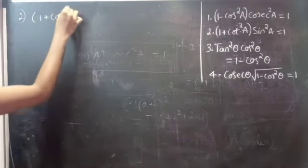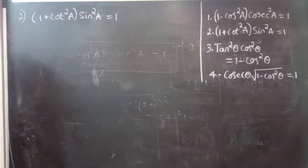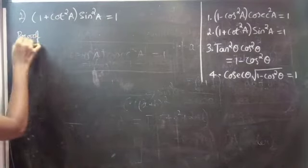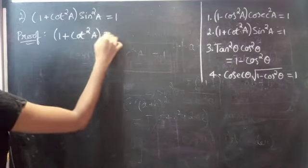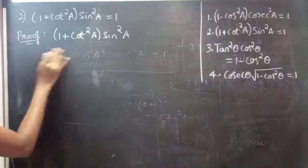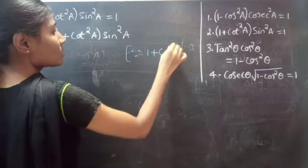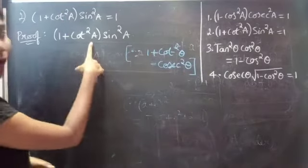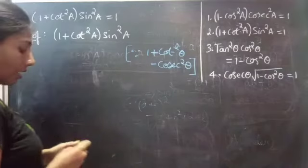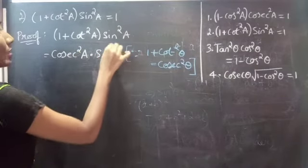Second one: prove that (1 + cot²A) · sin²A = 1. Consider the LHS part: (1 + cot²A) · sin²A. We know that 1 + cot²θ = csc²θ, so we replace (1 + cot²A) with csc²A, giving csc²A · sin²A.